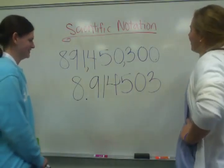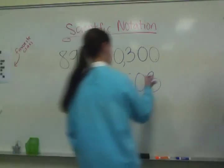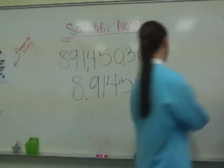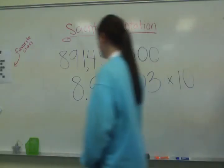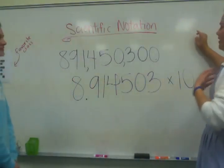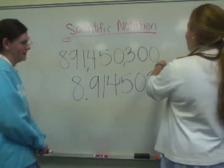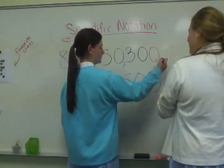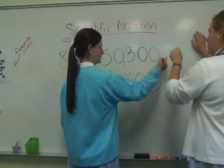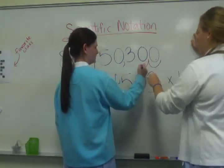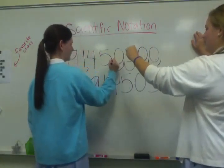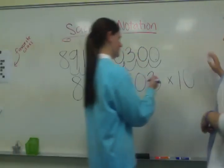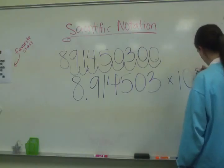And then you put times 10. What's the power? The power is — because this is an invisible decimal, because it's at the end of the number — so you go, count them: 1, 2, 3, 4, 5, 6, 7, 8. It's to the power of 8.